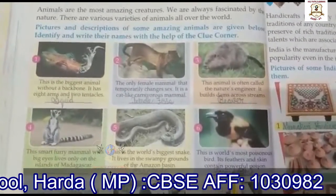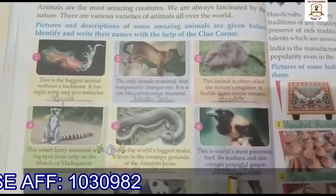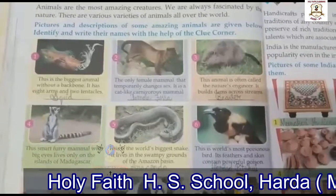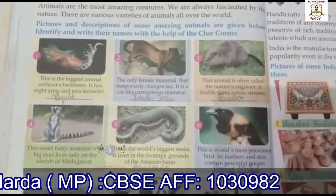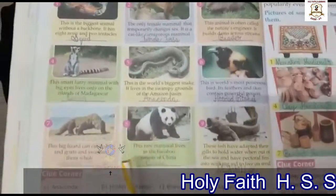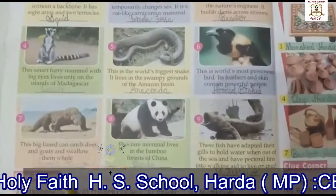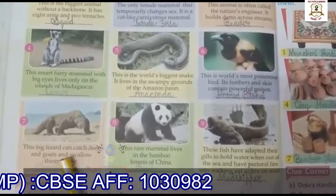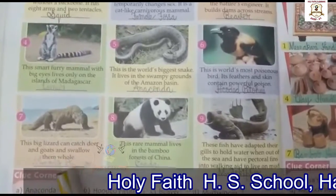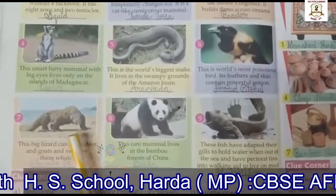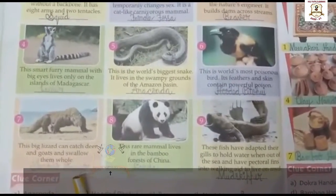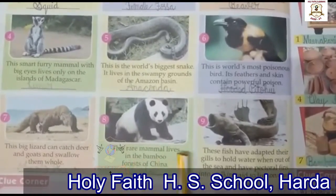The answer is anaconda. Now the sixth one: this is the world's most poisonous bird. Its feathers and skin contain powerful poison. The name of this bird is the hooded pitohui. Now the seventh one: this big lizard can catch deer and goats and swallow them whole. The name of this animal is komodo dragon.